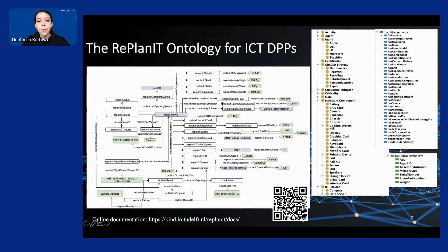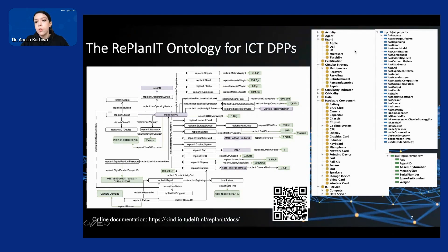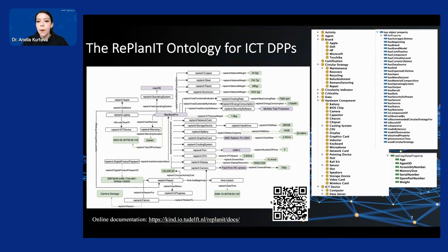Just to give you a quick overview of what is happening at the back end: based on our survey, we started developing our own Replanet ontology, which is novel in that it represents the ICT, materials, and circular economy domains and interconnects the different concepts between them. We focus mainly on servers and computers, representing different hardware components, circular strategies, and many more concepts such as activities, brands, and agents that are part of the history of an ICT device. On the left side, you can see how we use this ontology to annotate data and create a knowledge graph. We've published our ontology and you can scan the QR code to see the online documentation.